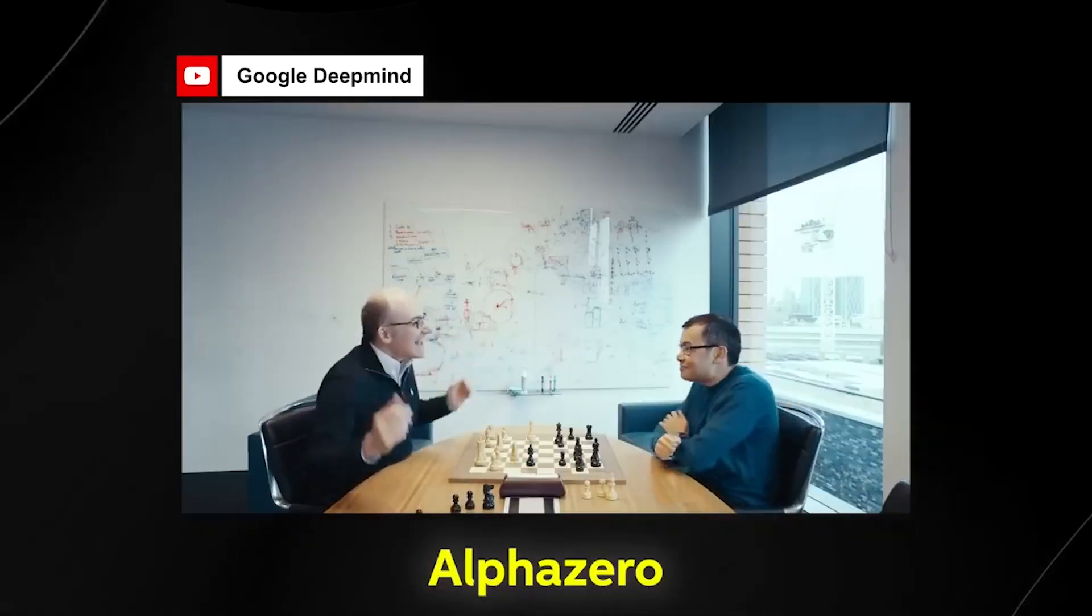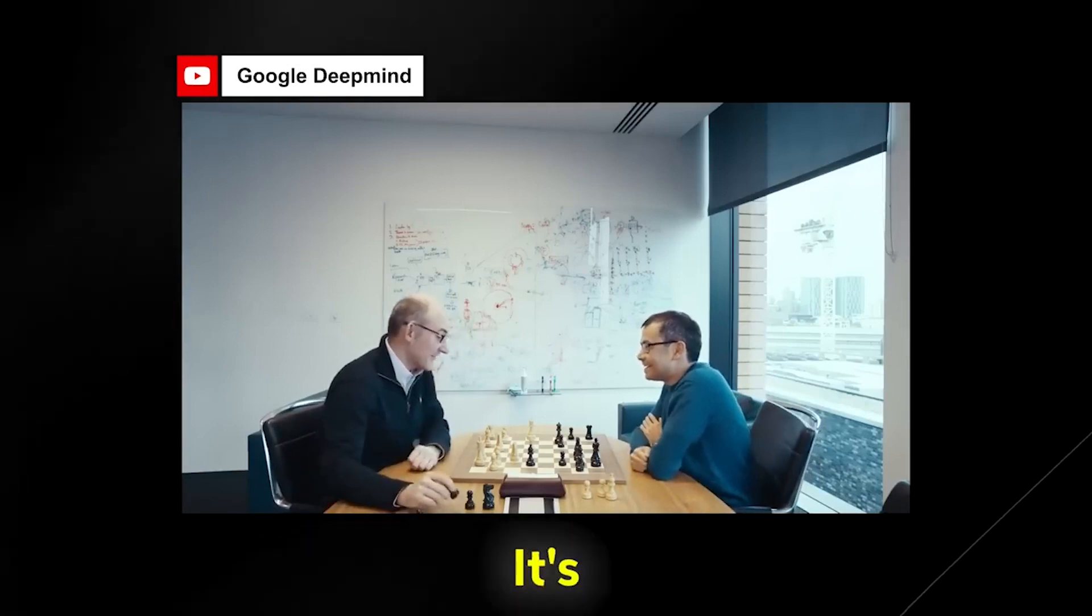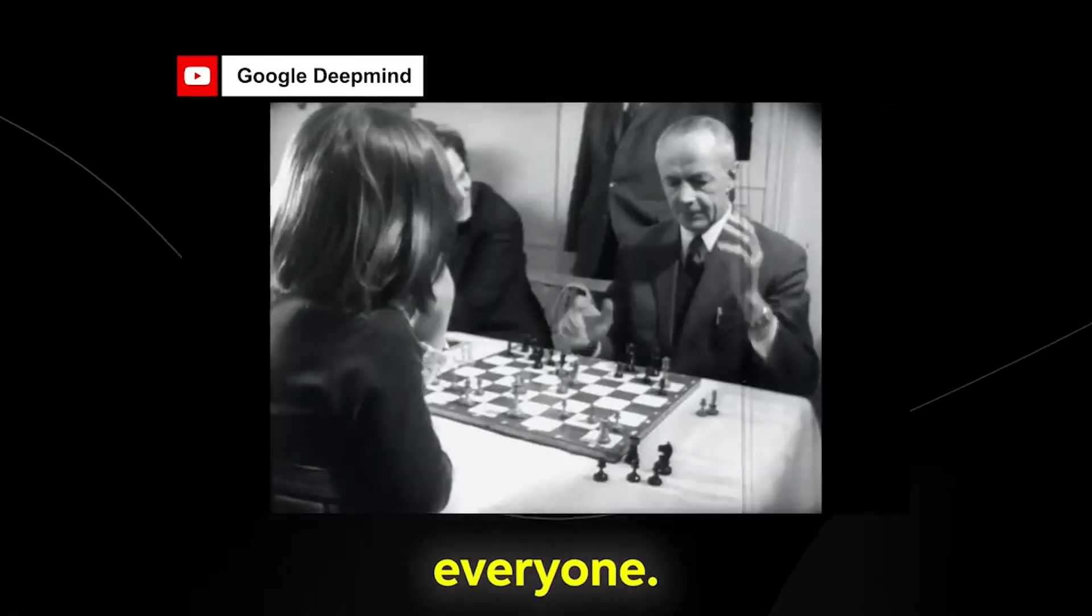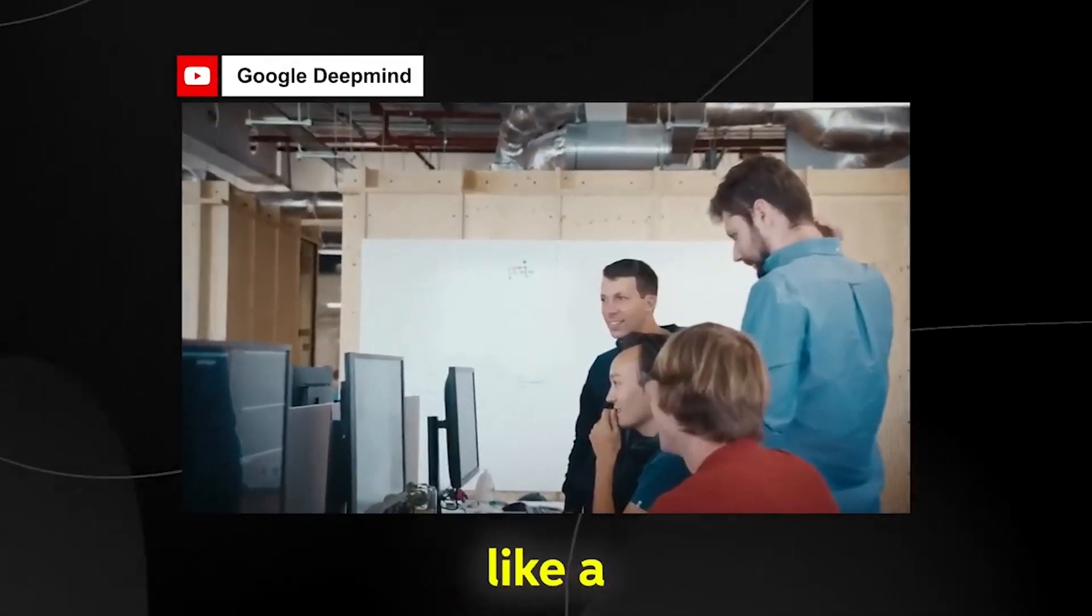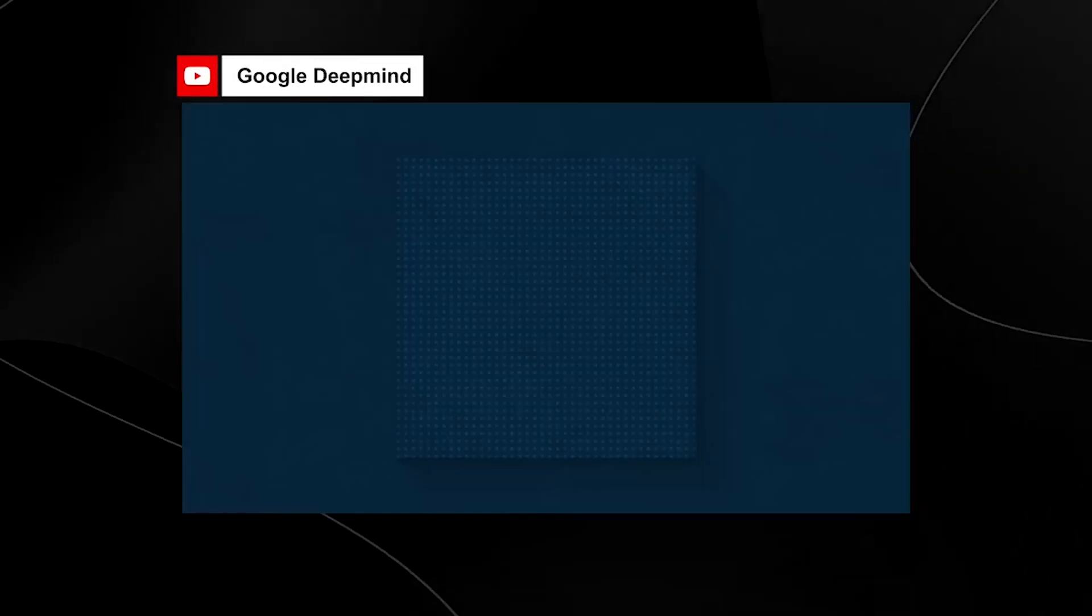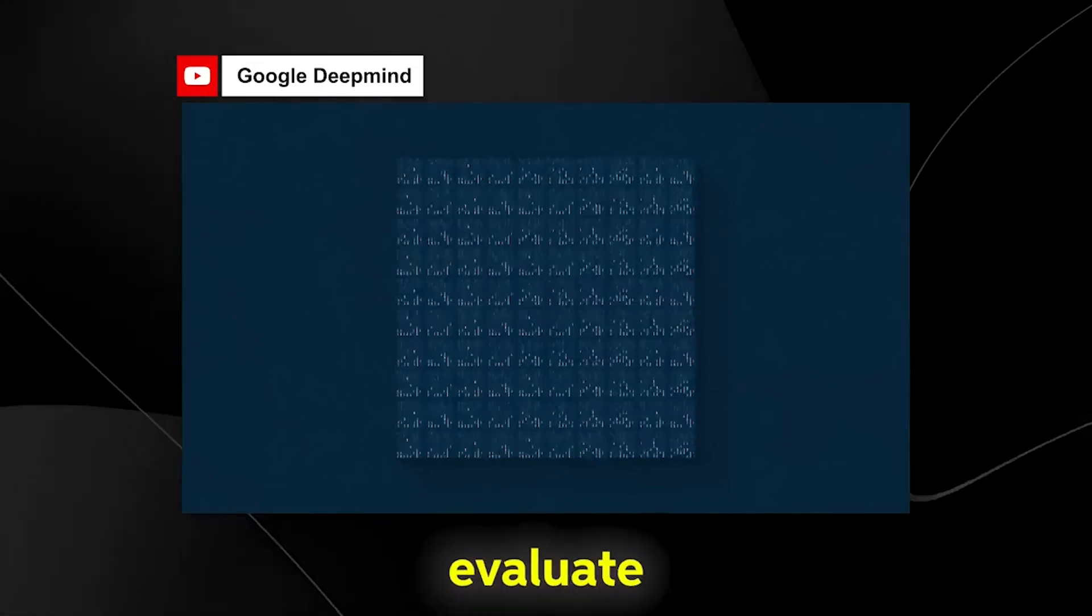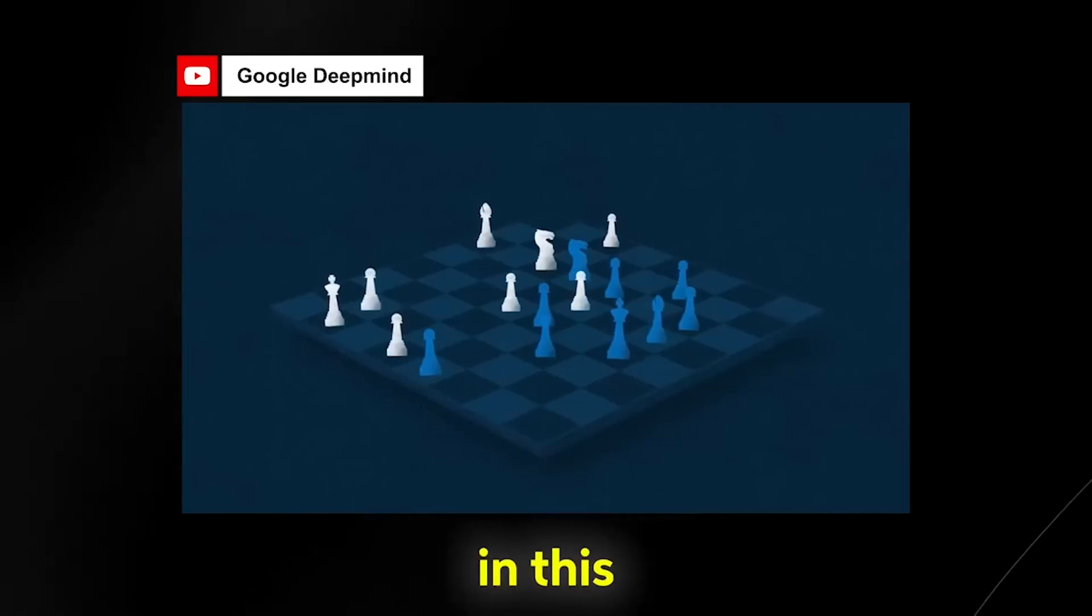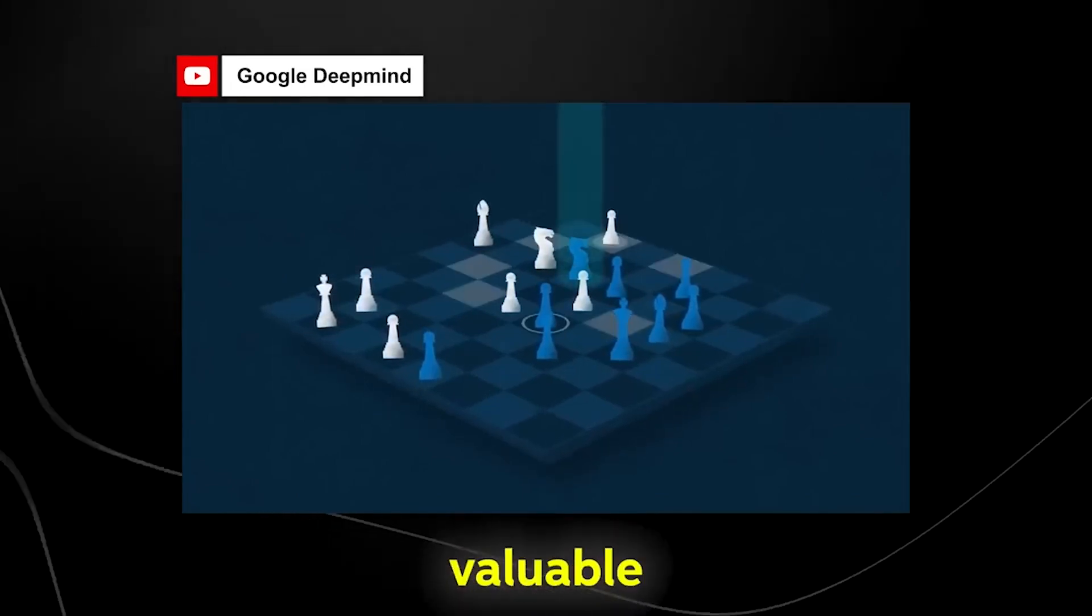I could see that AlphaZero was trying something different. It's like this young kid from deepest Russia is sort of arriving and then suddenly beating everyone. It doesn't have an engine-like style. It plays like a human on fire. It can really try and evaluate things contextually in the moment. You know, right now, in this particular position, how valuable is my knight?